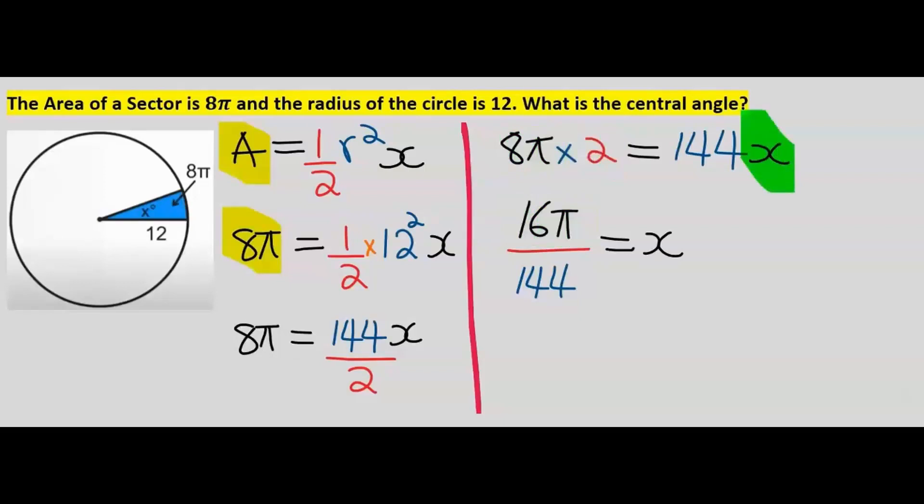However, we want to isolate x, and 144 will now move to the other side to divide. And x becomes 1/9 π in radians.